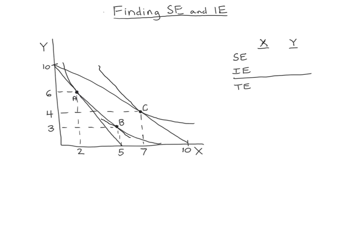So what we're going to do is calculate the total effect that changed from a to c. So the price of x went down. That caused us to switch from consuming bundle a to bundle c. So that has a total effect. Whenever we talk about these effects, they're really two effects. They're an effect on x and an effect on y, right? Because as we move from a to c, we can see x changes from two to seven. So we could say the total effect is positive five. But y falls from six to four. So the y total effect is negative two.